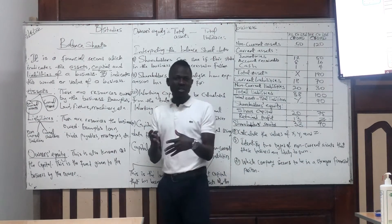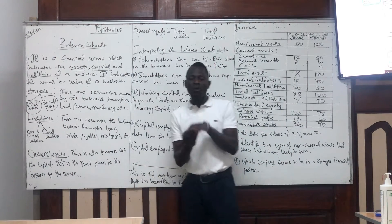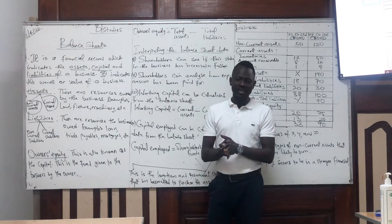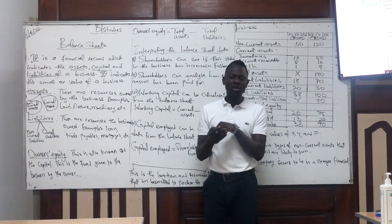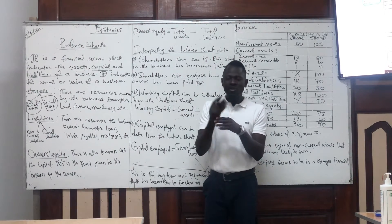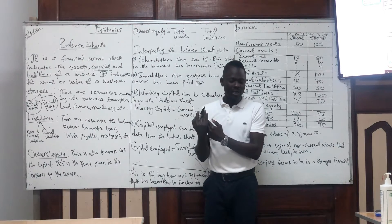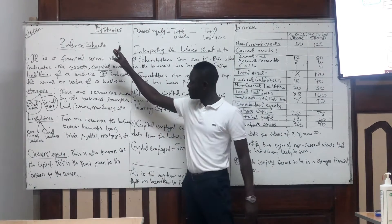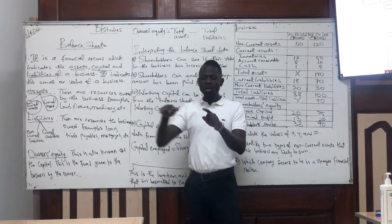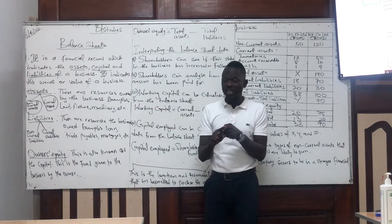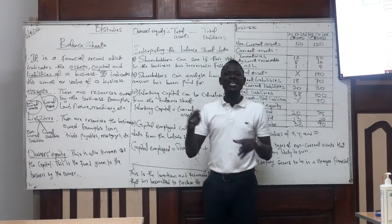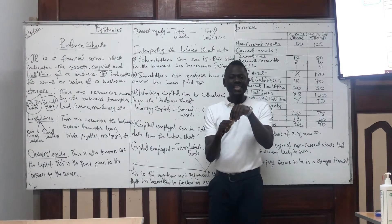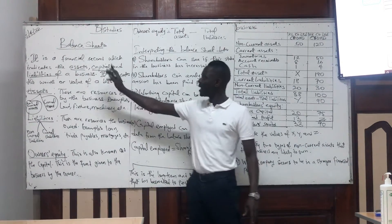As a business, you first need the financial records. The financial statements we are talking about here include the income statement, which we explained previously, and the balance sheet, which we have to explain now. The combination of the income statement and the balance sheet gives you all the final accounts or financial statements. So what is the balance sheet?